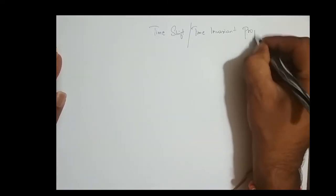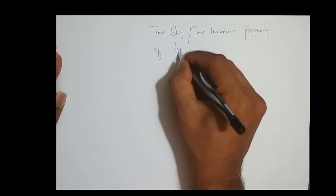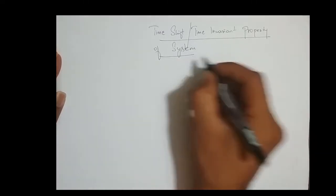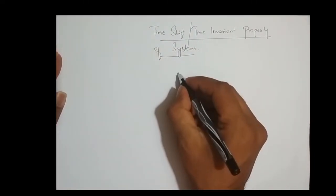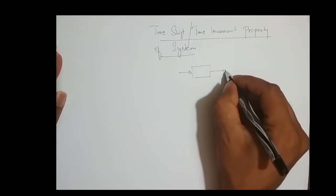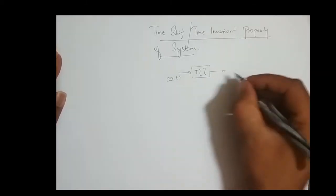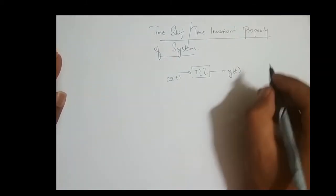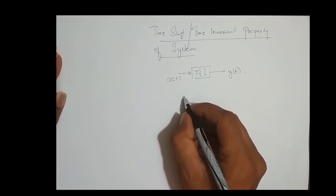Property of a system. Consider that we have a system which does some transformation to the input x(t) and gives an output. A system is said to be time invariant if the shift in the input signal should give a corresponding shift in the output signal.